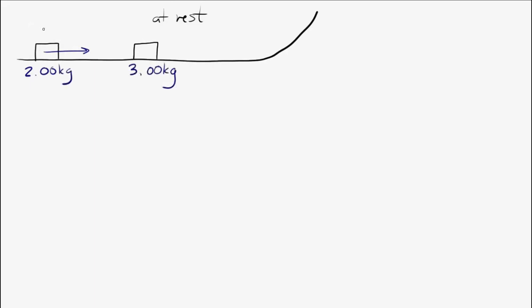And the moving block, let's make it move at 10 meters per second to the right. Now there's no friction, so we don't have to worry about that.